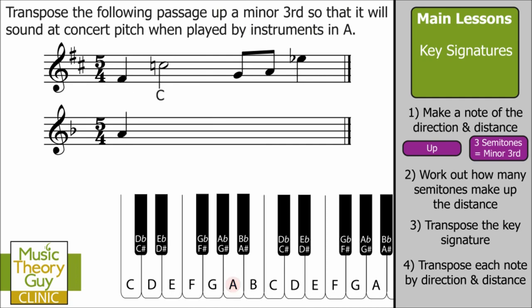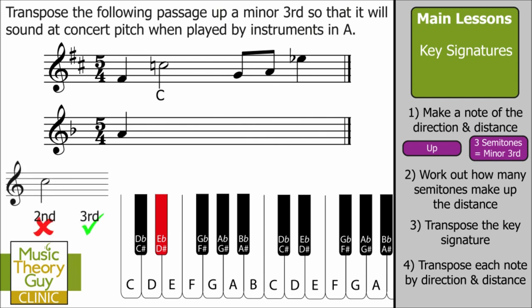Our next note is C. Here's C on the keyboard; we go up three semitones: one, two, three. Now, is it E flat or D sharp? This is where you need to know about intervals — C to D sharp would be a second, which is incorrect. We're transposing up a minor third, and C to E flat is a third, so E flat is our answer. Write that down.